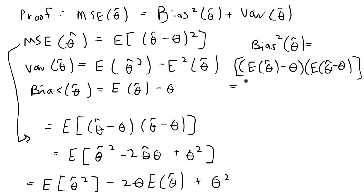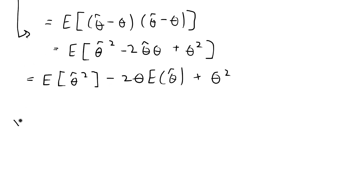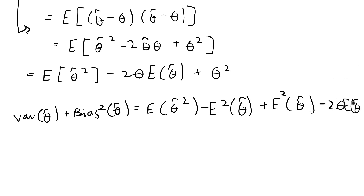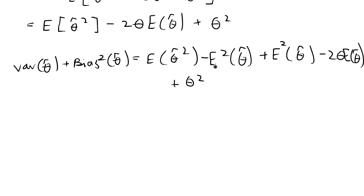Expanding that expression gives us the expected value of theta hat squared minus 2 theta times the expected value of theta hat plus theta squared. So variance of theta hat plus bias squared of theta hat equals: the expected value of theta hat squared minus the expected value squared of theta hat — that's the variance portion — plus the bias squared, which is the expected value squared of theta hat minus 2 theta times the expected value of theta hat plus theta squared. The minus expected value squared of theta hat and the plus expected value squared of theta hat cancel out to zero.